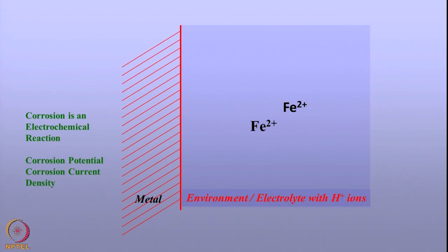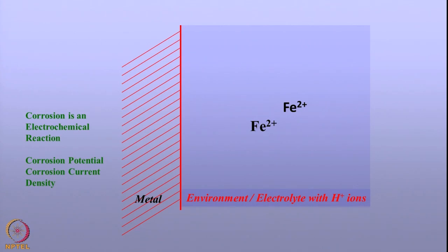Suppose I immerse this metal surface in the acid and I use a reference electrode to measure the potentials — the metal will show a potential called the corrosion potential. In the cathodic protection parlance, we call them as natural potentials or open circuit potentials, because the current does not leave the metal surface. The oxidation reaction and the reduction reaction occur equally on the metal surface — there is charge conservation taking place. Using Faraday's law, you can calculate the corrosion rate from the charges flown per second, related to corrosion current density. The aqueous corrosion, to be more precise, is electrochemical in nature.